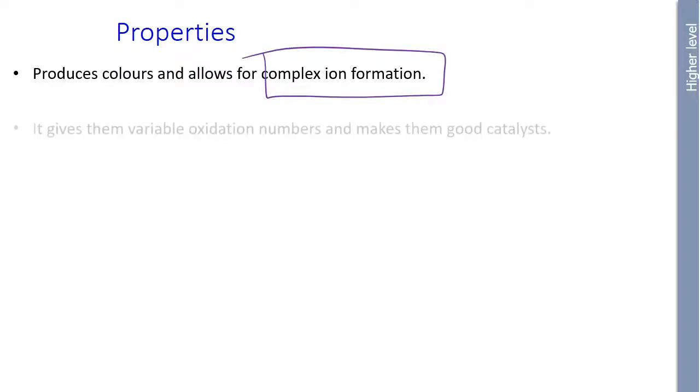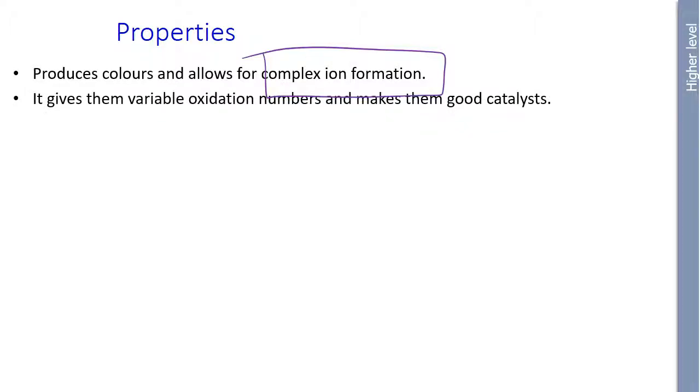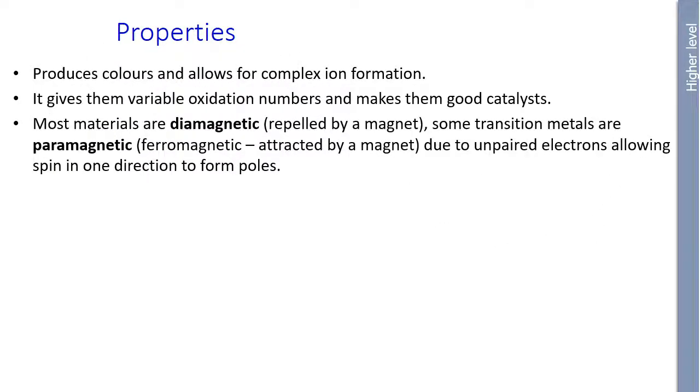So what are these magical properties? Well, transition metals produce wonderful compounds which have pretty colors. And it also allows for something called complex ion formation, which we'll look at in a little bit more detail later. It gives them a variable oxidation number and makes them good catalysts. So when I say variable, it means that they have a range of different oxidation states. They form a range of different ions, basically, of different values of their charges.